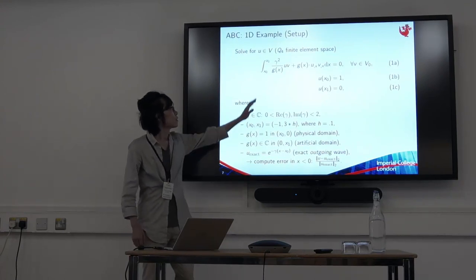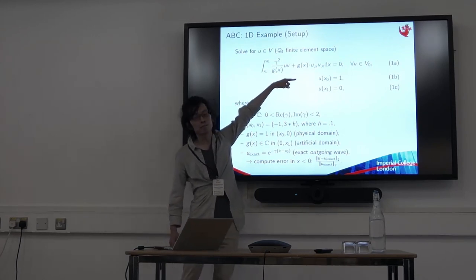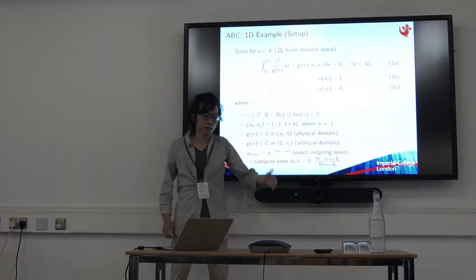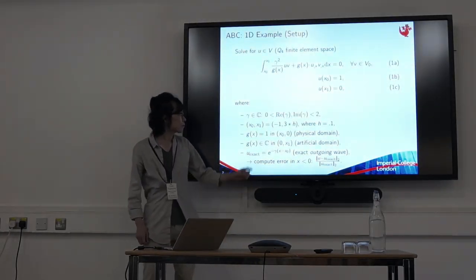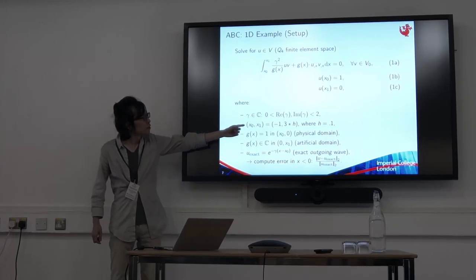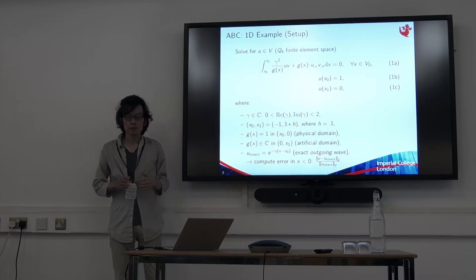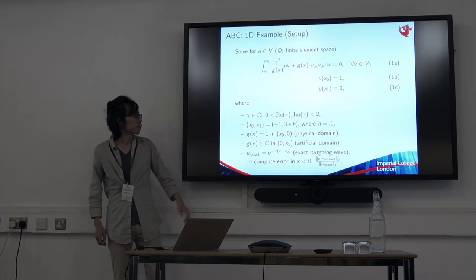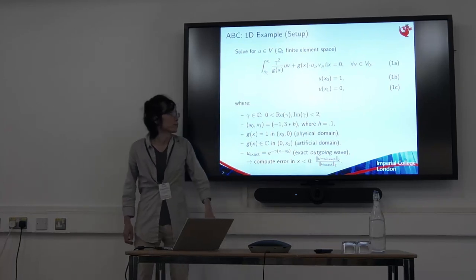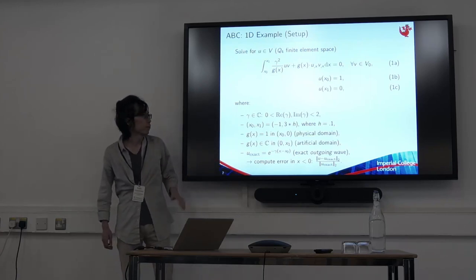One example, we use Q4 finite element, Q4 or P4 finite element. And this is the Helmholtz-like equation. And this is the boundary condition, a physical boundary condition we apply on the left of the boundary, left of the domain. And this is the boundary condition we apply on the end of the artificial domain. And gamma is complex, and we vary gamma in this region in the complex plane. And this is the physical domain plus artificial domain. We have three elements in the artificial domain. And in the context of PMLs, we say we have three layers in the artificial domain. And GX is assumed to be 1 in the physical domain, which means this equation reduces to the standard Helmholtz equation in the physical domain. And it takes some complex profile in the artificial domain, depending on the method we use, PML, PMDL, or something else.